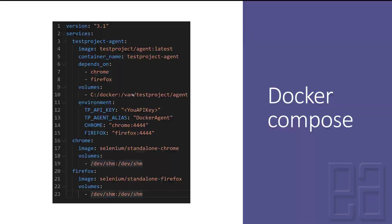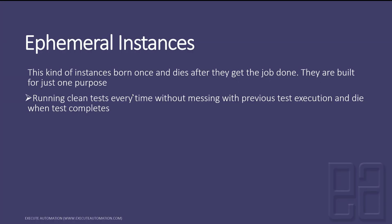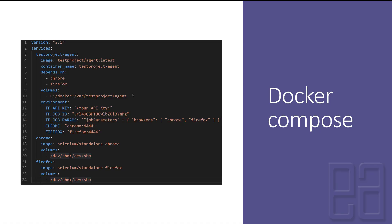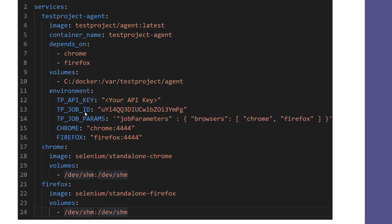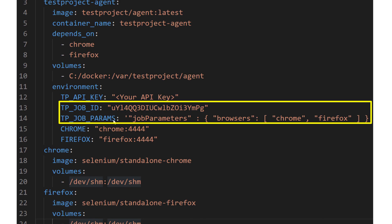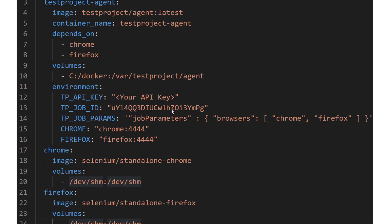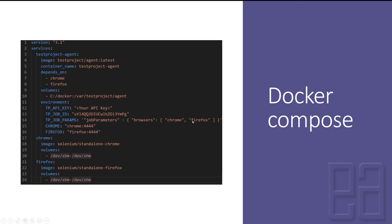The next way is the ephemeral instances. These instances burn once and die after they get the job done — they are built for just one purpose: running a clean test every time without retaining previous test execution data, and they die when the test completes. The Docker Compose file is pretty straightforward but with a few changes: you have a TP_JOB_ID and TP_JOB_PARAM where you pass the job ID from the test project platform and specify which browser — Chrome or Firefox — to execute the job in.